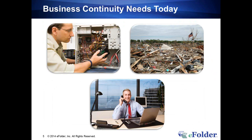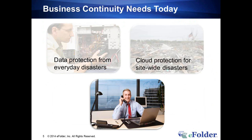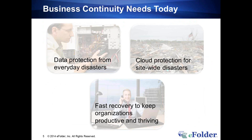The eFolder business continuity service portfolio addresses three key needs of partners. There are the everyday disasters — roughly 90% of all disasters you'll face are hardware failures, user error, and servers going down on-site. But there are also occasional site-wide disasters. The picture on the slide depicts the town of Joplin after a Category 5 tornado wiped out almost the entire city. So site-wide disasters do indeed happen. But at the end of the day, what we're really trying to do is protect people's productivity — delivering BDR and business continuity services so that you can get clients quickly recovered, whether it's an everyday disaster or a site-wide disaster.